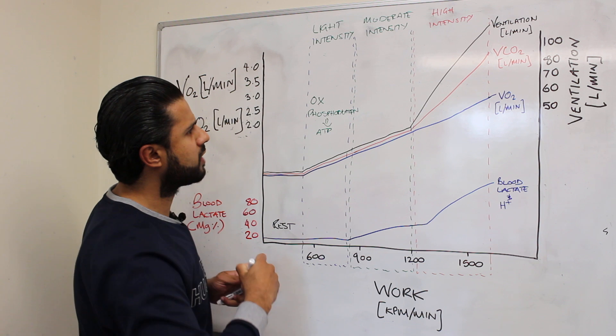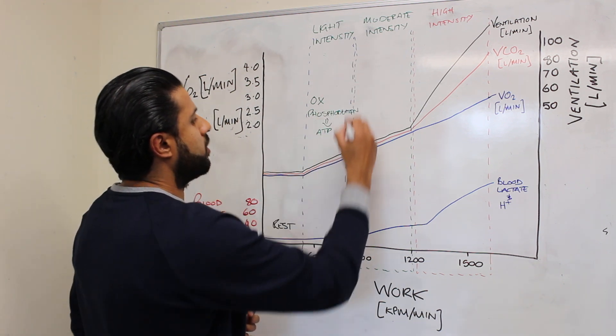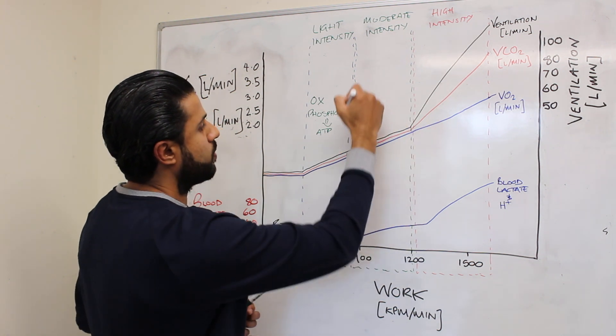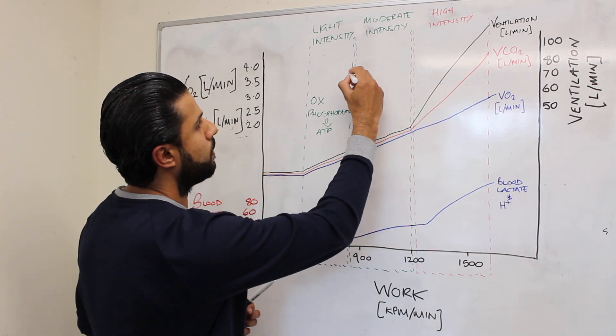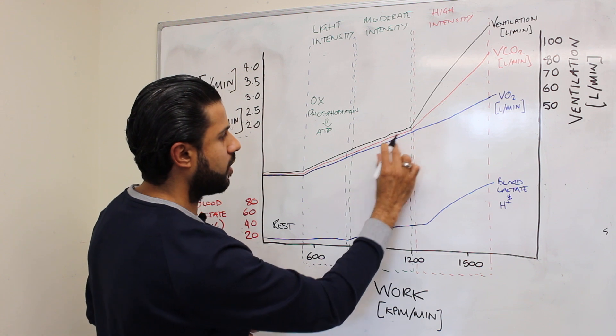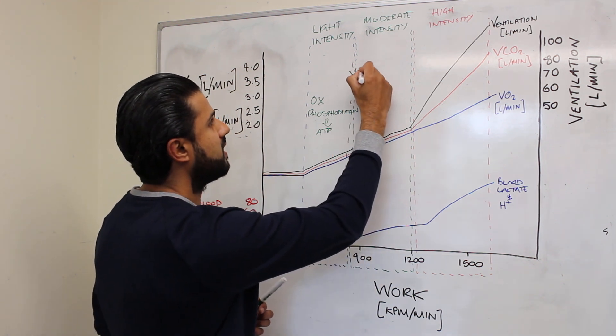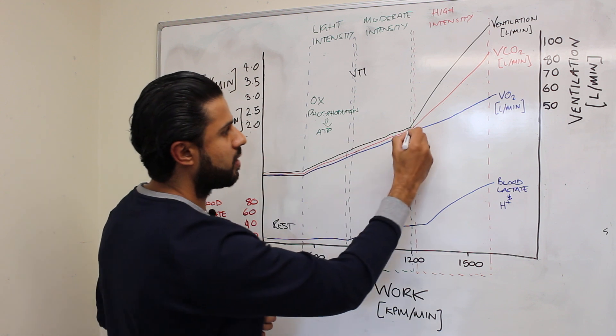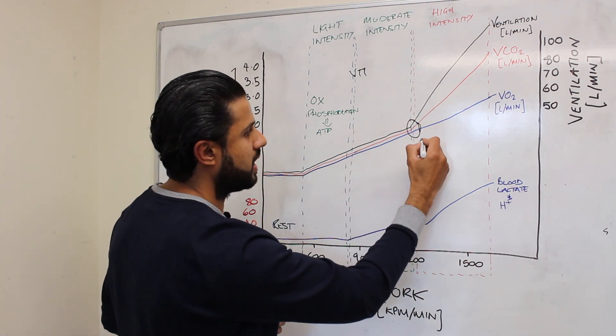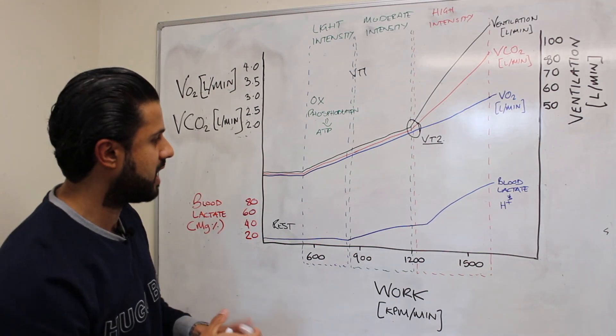Now generally the ventilatory threshold occurs later on but we see that as we go into a moderate intensity we will start to see the next phase of the increase in these parameters. So this is generally known as VT1. When the ventilatory threshold occurs around about here this is known as VT2 and we'll speak a little bit more when we get to that stage.